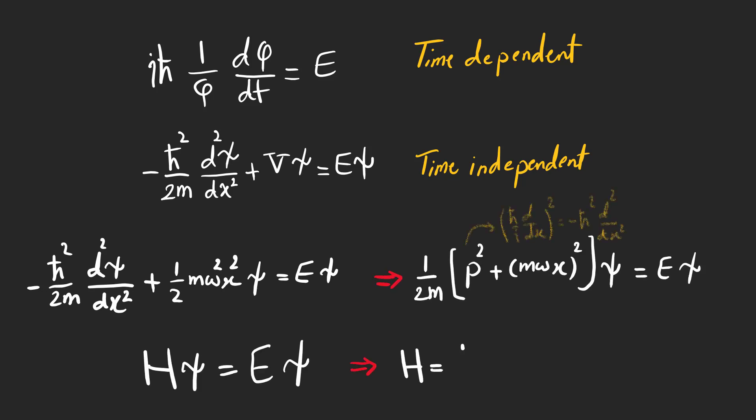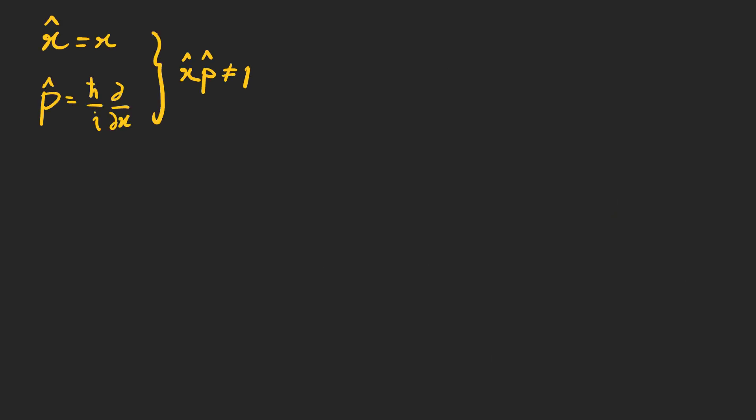And the Hamiltonian, for which we need to solve the time-independent equation, can be expressed as this. Note that x and p are operators and do not commute, meaning that xp and px are not equal.